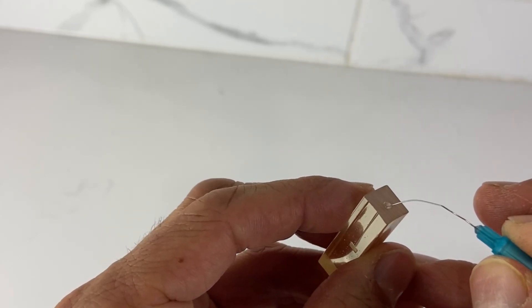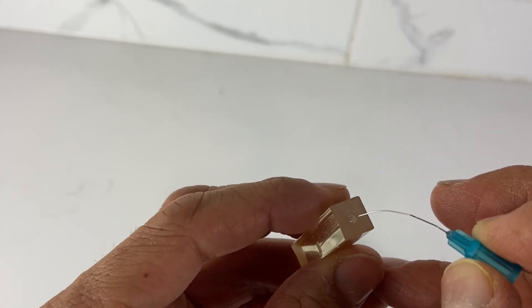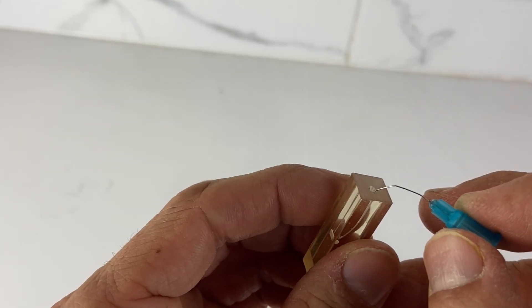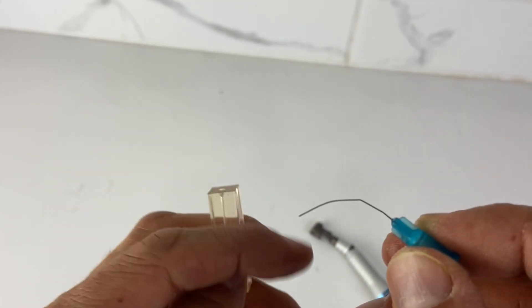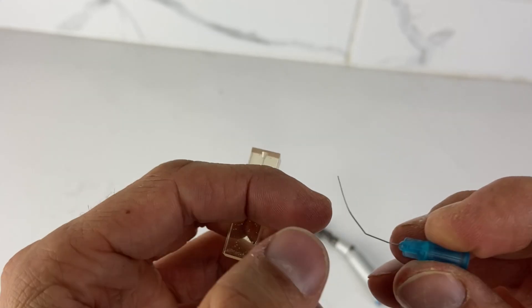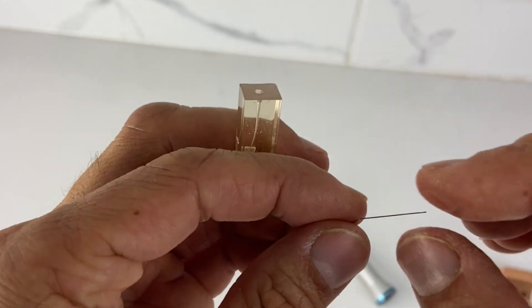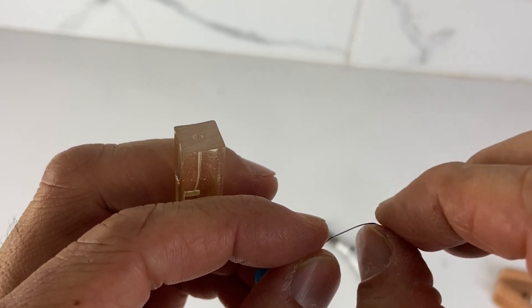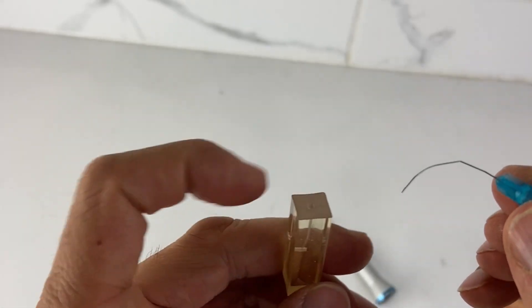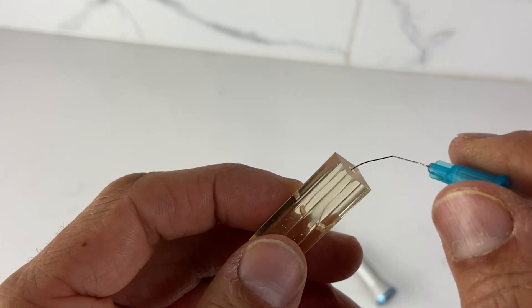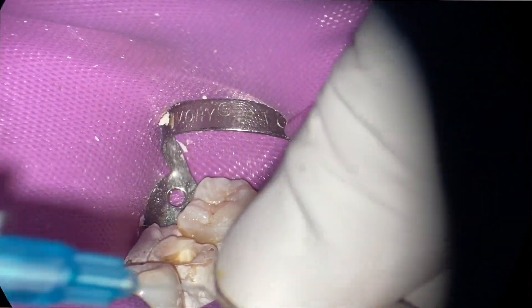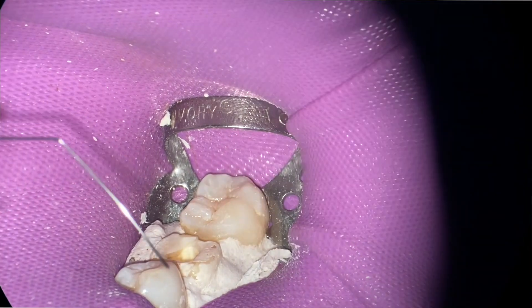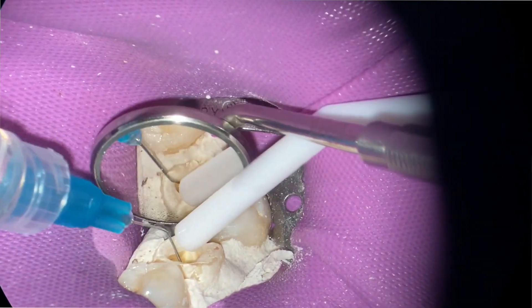Oftentimes if I need to get around a curve, I will actually bend it. If there's a mesial curve and I want to get down, I actually will bend after I've cleaned and shaped everything. So it actually will travel, traverse along that curve. That's not frequent that I do it, but I'll do it here and there.